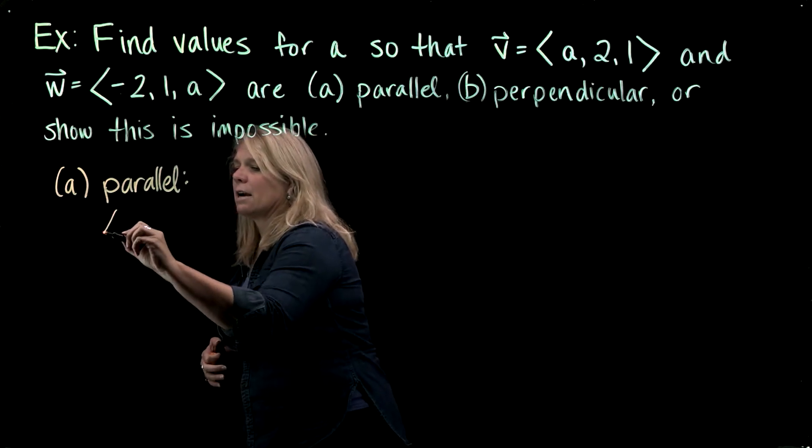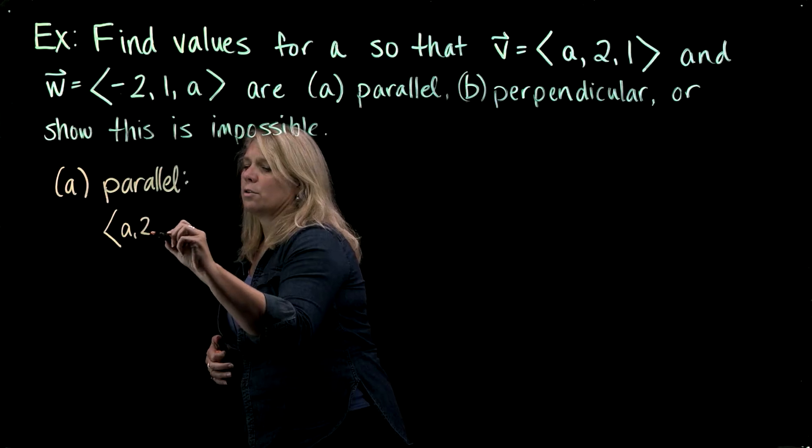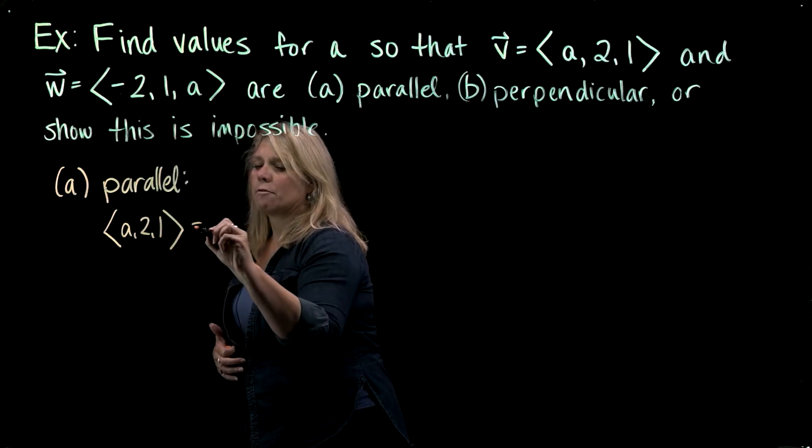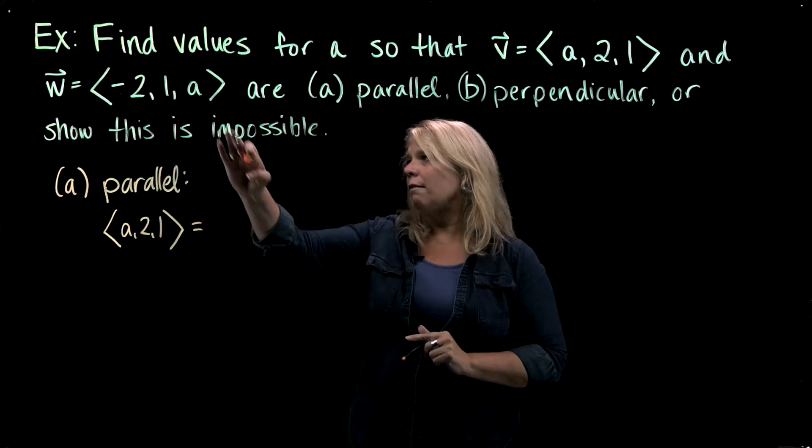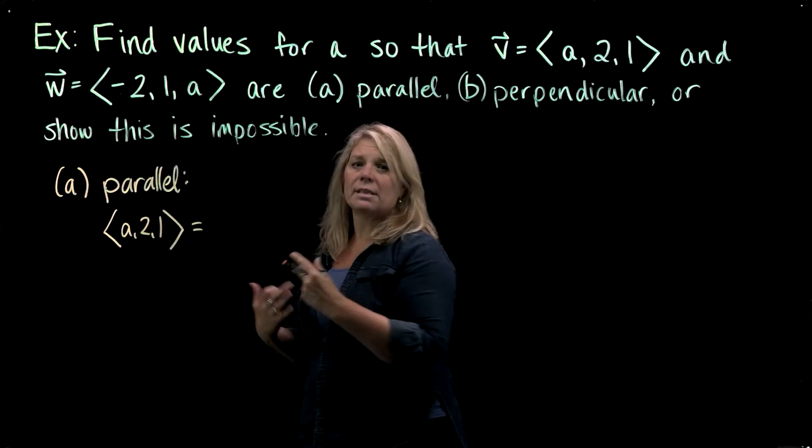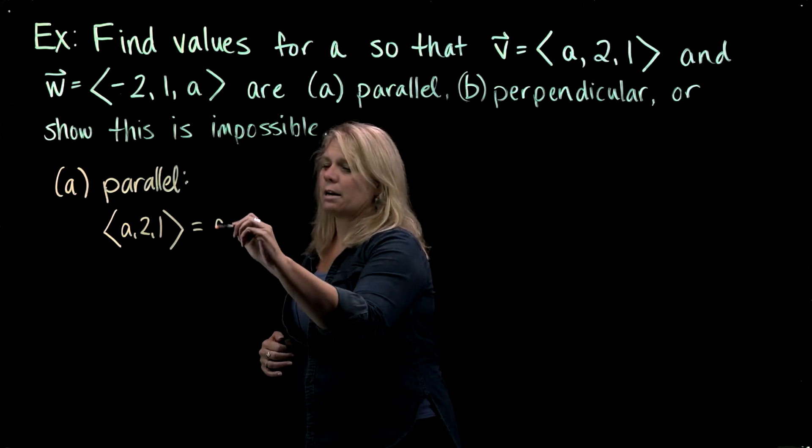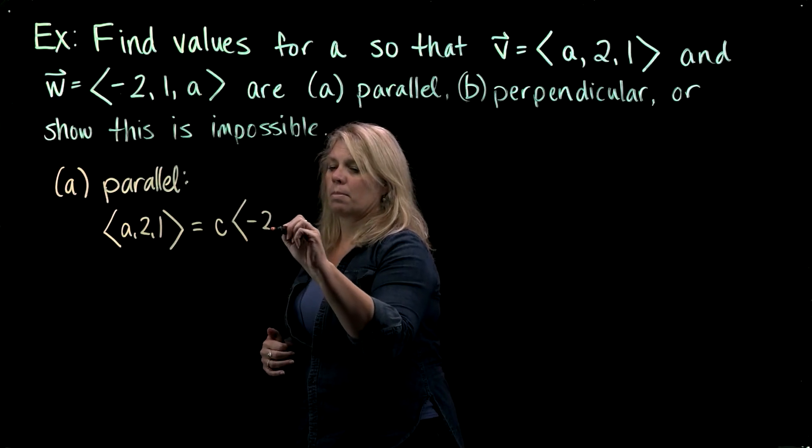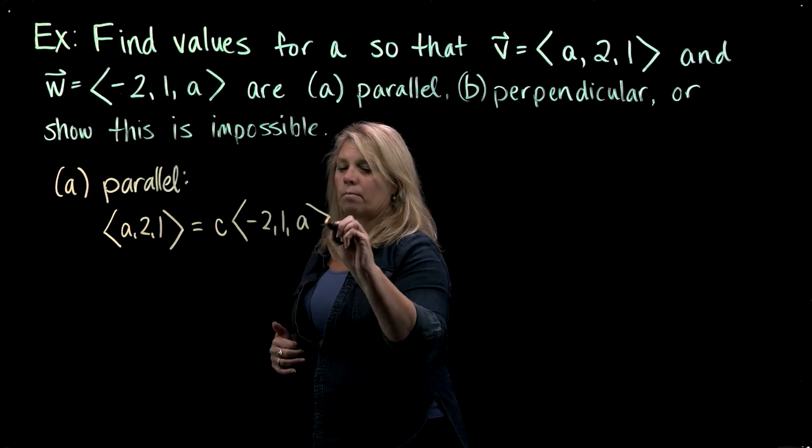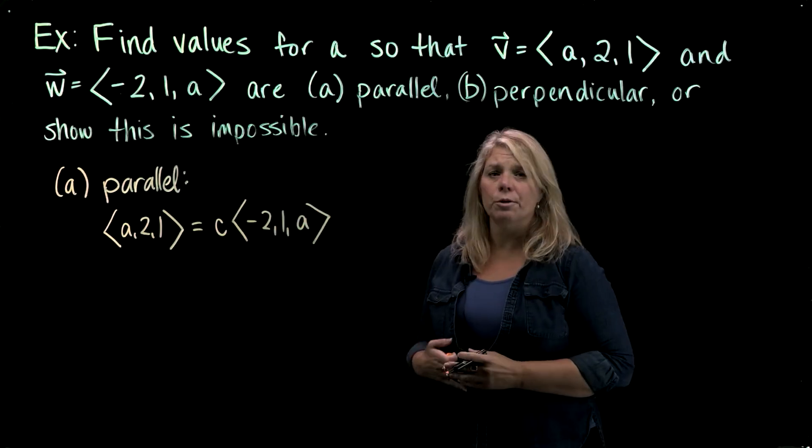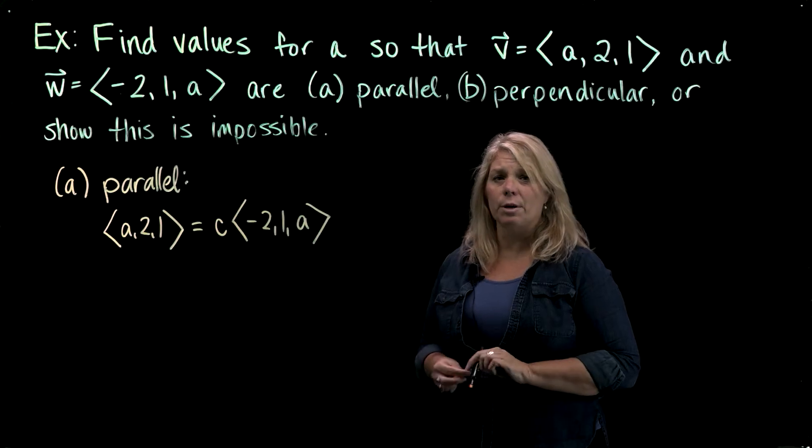So my vector V here, A, 2, 1, would have to be a scalar multiple of this vector W. I'm just going to use C for an unknown scalar here. Okay, so that would be true, this equation would be true if the two vectors are parallel.